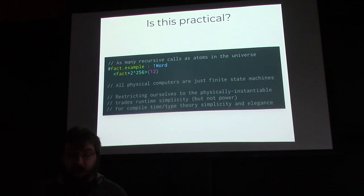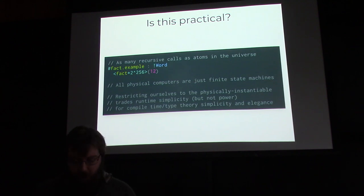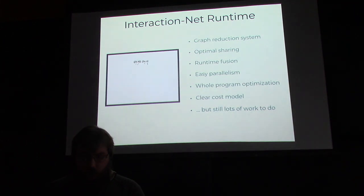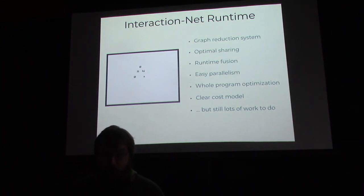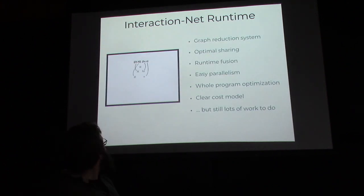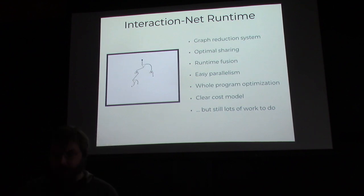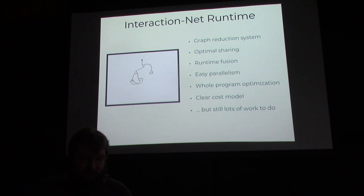Maybe that restriction will pay dividends in our theory being simpler because we don't have to deal with non-termination. Maybe that'll make the runtime a little more complicated because we have to introduce boundedness everywhere, but maybe that's a good trade-off. Specifically, what this trade-off allows us to do is take all of that complex dependent-type machinery and run it on a very fast and efficient runtime called interaction nets.